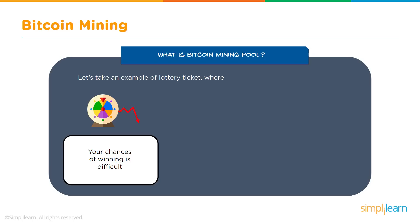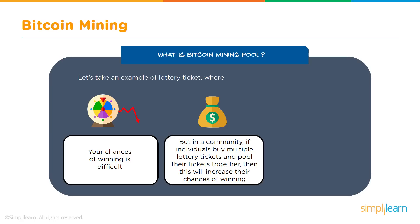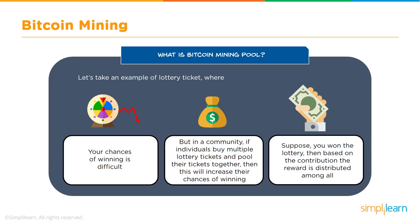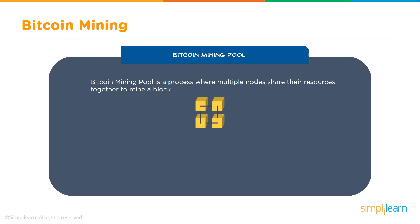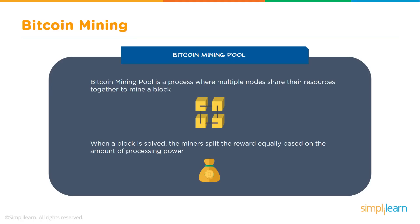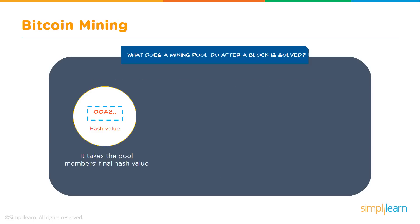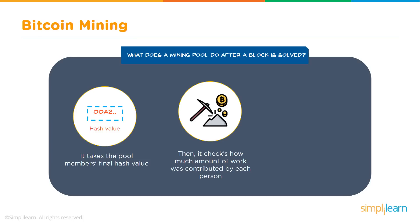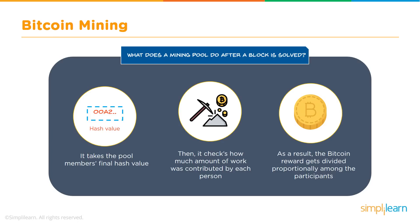What is a Bitcoin mining pool? Consider a lottery where your chances of winning alone are small, but if individuals pool their tickets together, the probability of winning increases. If the pool wins, the reward is distributed based on each member's contribution. A Bitcoin mining pool works similarly — multiple nodes share their resources to mine a block together. When a block is solved, miners split the reward based on the amount of processing power each contributed. The pool checks how much work each member contributed and distributes the Bitcoin reward proportionally.